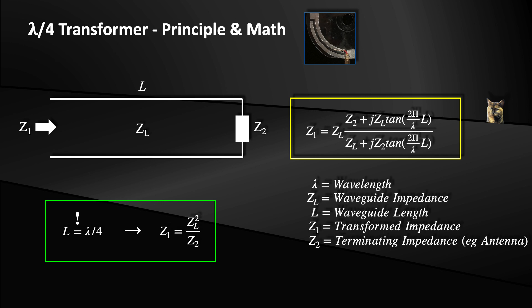Back to the method. First, I want to show you a very simple principle that can be used to match an antenna impedance to the right value. A transmission line can transform impedances. I give the general formula here in the yellow box. With a little arithmetic with complex numbers, you can use the length of the line, the frequency, and the characteristic impedance to calculate how an impedance Z2 is transformed into an impedance Z1. In the case where the waveguide length is a quarter of the wavelength, the formula simplifies really nicely. The simplified formula is written in the green box.